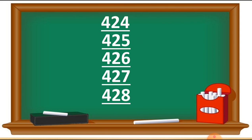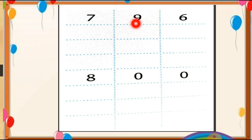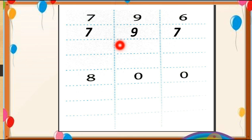Hope you understood this topic. This is your textbook exercise and I also sent this table to you as homework. Hope this work is complete. Let's start solving it. Here is 796. We just make changes in the last two digits. After 96, the number 97 will come, so we write 797.